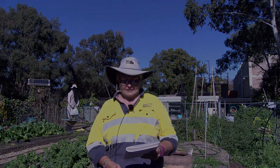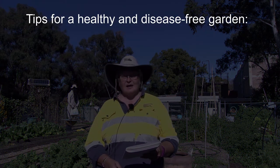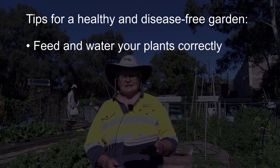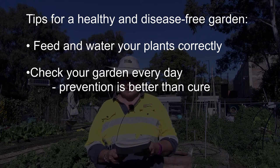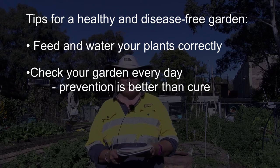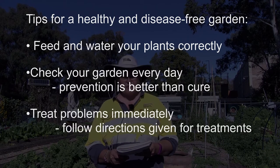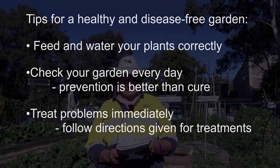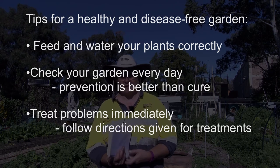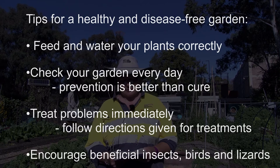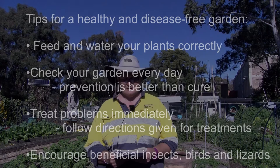For a healthy, weed and disease-free garden, here are my main tips. Have naturally resistant healthy plants by feeding and watering your plants correctly. Vigilance is the key — look at your garden every day for signs of damage. And remember, prevention is better than the cure. If you do find a pest of some kind, identify it immediately and treat it immediately with an appropriate treatment. Follow the directions on the packet carefully and wear the correct PPE. Encourage beneficial insects, birds and lizards and other critters into your garden. And enjoy your little slice of paradise. See you next time, and meanwhile, go out and get your hands dirty.